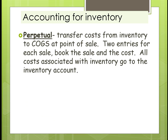In the Perpetual system, we're going to transfer the cost from inventory to cost of goods sold at the point of sale. There are two entries for each sale: book the sale, and then you've got to transfer the cost out of inventory to cost of goods sold. All costs associated with inventory go to the inventory account.